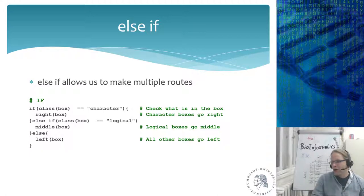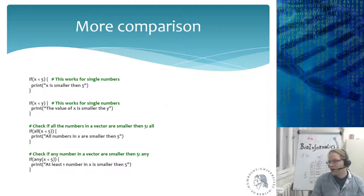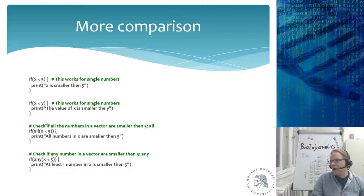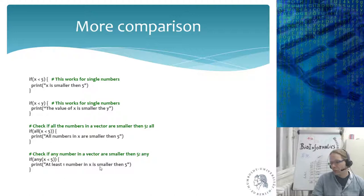If statements guide boxes and do logical testing. When you have a for or while loop doing many things, you usually have an if statement to process different cases. For comparison, with a single number you can ask if x is smaller than five and print accordingly. For vectors in R, you use the 'all' or 'any' keywords: 'all' checks if all elements satisfy the condition, while 'any' checks if at least one does.